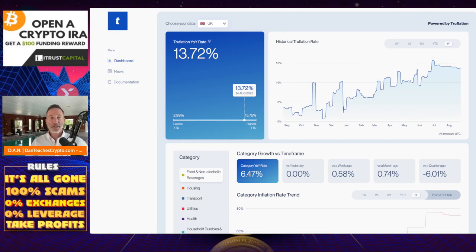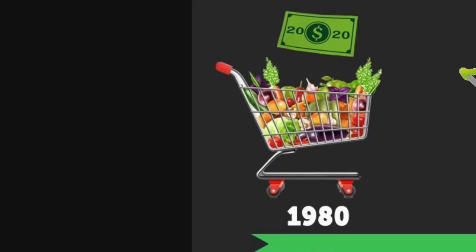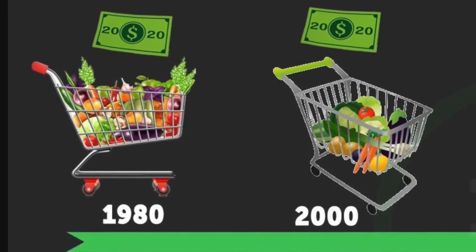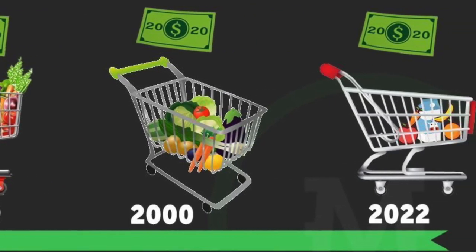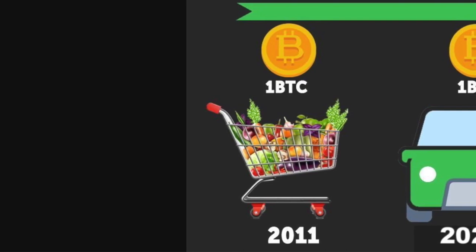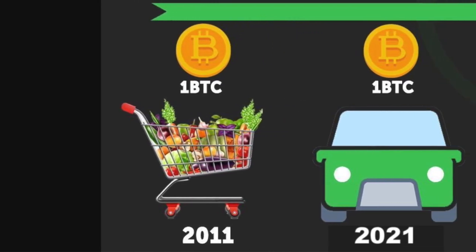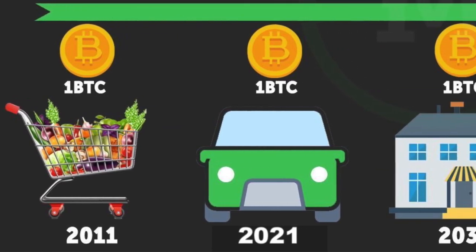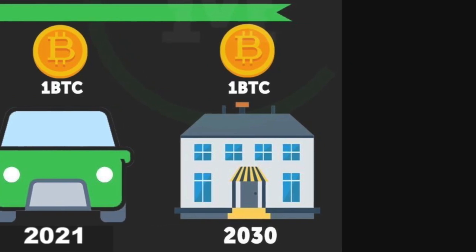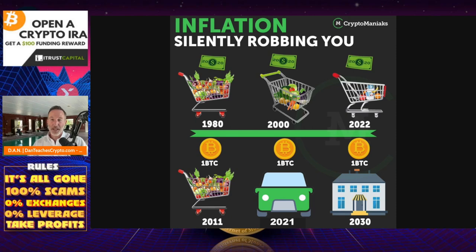Knowing all these things we just talked about — Milton Friedman, the M1 money supply, the Cantillon Effect — I just need you to think about assets. One of the assets I invest in is Bitcoin. To make this crystal clear: if you had $20 in 1980, you could buy a heck of a lot of groceries. By 2000, not as much. In 2022, $20 doesn't get you too much at the supermarket. But think about Bitcoin: in 2011, one Bitcoin cost roughly $20 — the same as a basket of groceries. In 2021, one Bitcoin could have gotten you a decent car. Who knows what it'll be in 2030, but there is quite a bit of price appreciation compared to the US dollar.